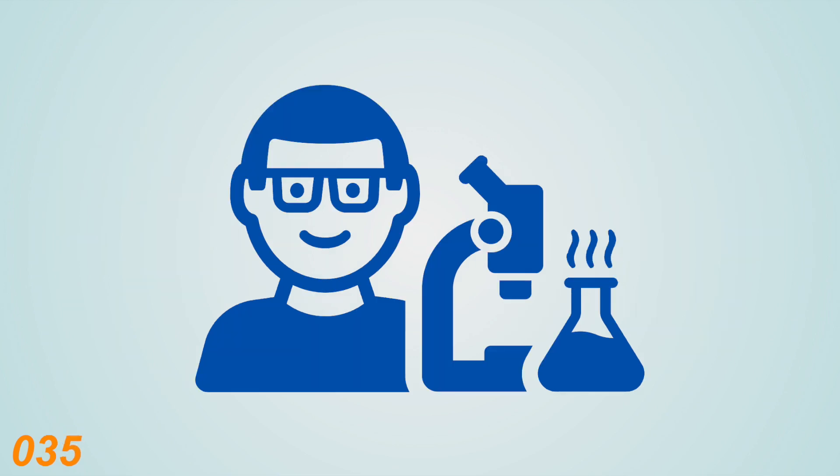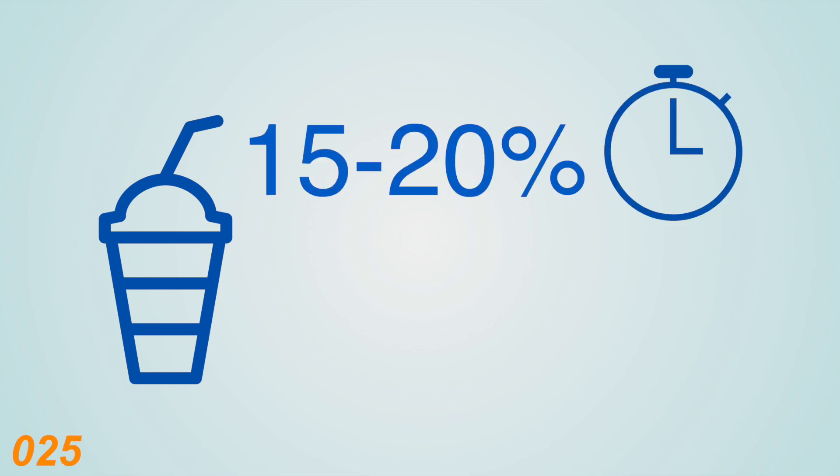In one study, people aged between 18 and 30 were given a smoothie before doing tests of their mental acuity. Everyone's brain power dipped in the afternoon, but after five hours it was 15 to 20% higher if the smoothie they drank had contained 200 grams of blueberries.